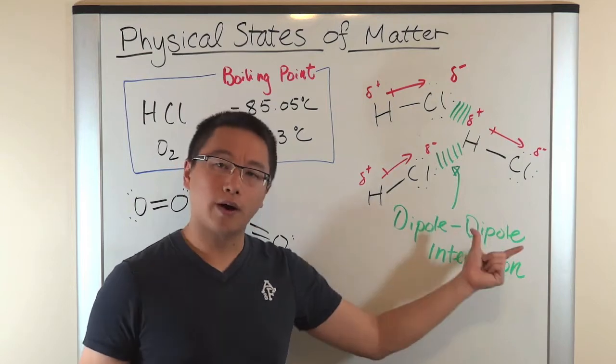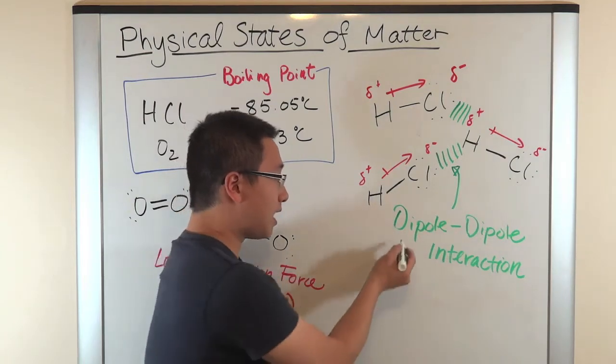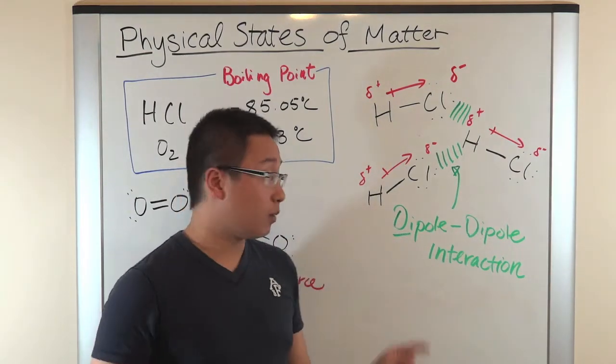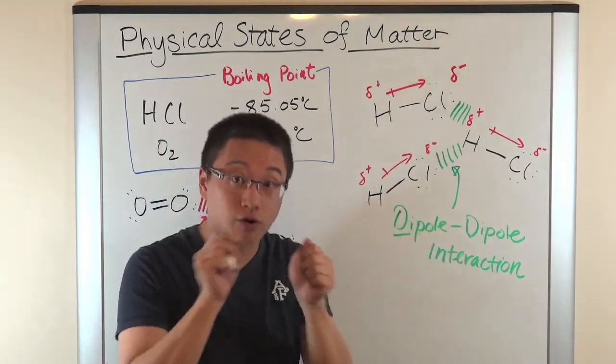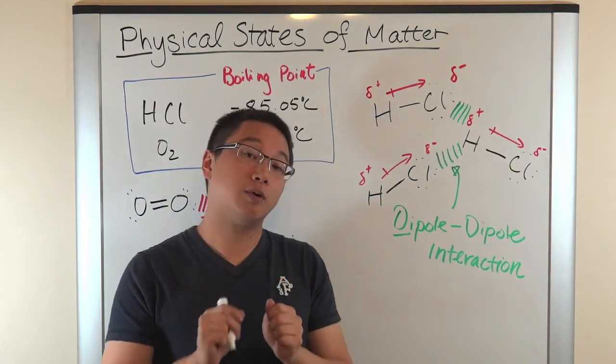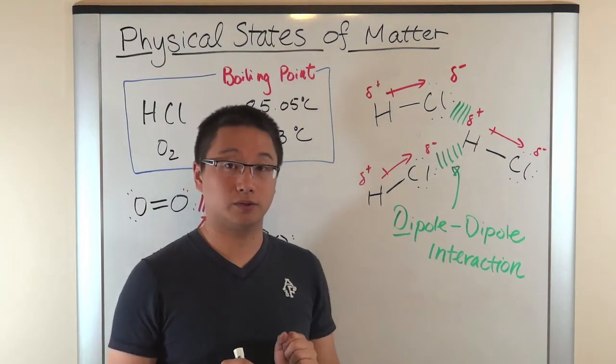So, why do we repeat the same word twice? So, dipole, di means two, and we have two poles, and two poles attracting each other. So, this is what we see for polar molecules.